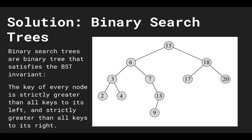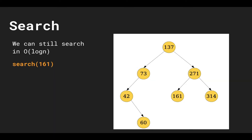The answer is yes, and the solution is binary search trees. A binary tree is a tree where every node has at most two children. On top of that, binary search trees are binary trees that satisfy the BST invariant: the key of every node is strictly greater than all keys to its left and strictly less than all keys to its right. So for every node, all nodes in its left subtree are less than the node, and all nodes in the right subtree are greater. The BST invariant gives us a sorted structure so we can still search in O(log n) time.